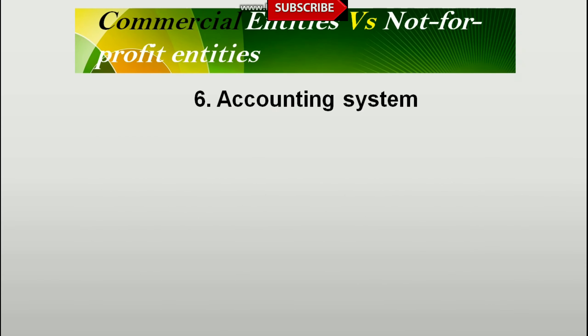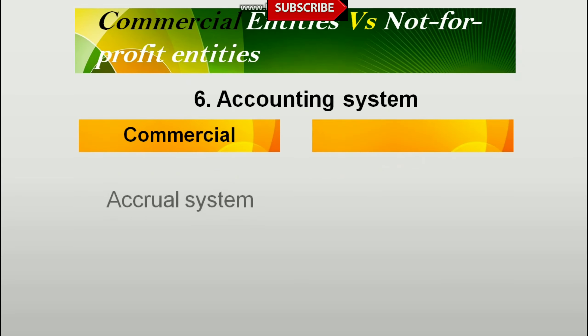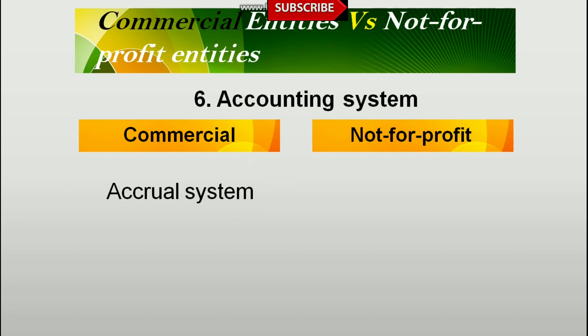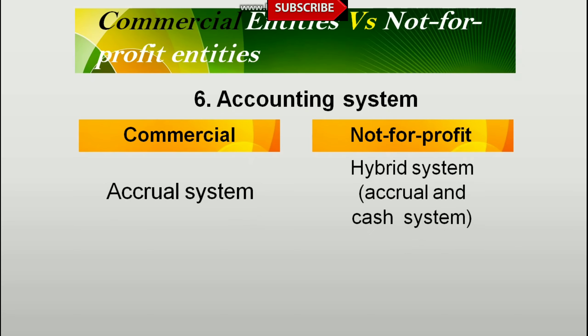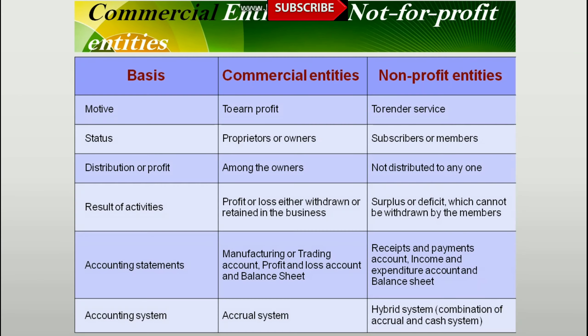Sixth difference — accounting system: in commercial entities the accrual system is followed, and in NPO a hybrid system is followed, meaning both accrual and cash systems are followed. These are all the differences — the basis are motive, status, distribution of profit, result of activity, and so on.